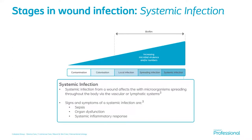Then we move on to systemic infection, where the wound bed is really affected by those microorganisms — they're starting to spread throughout the body through the vascular and lymphatic systems. You're at high risk here of sepsis and organ dysfunction, and this is something that really needs urgent attention and probably hospitalisation.